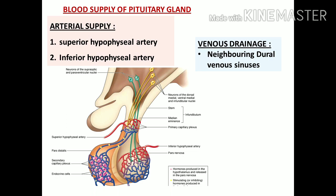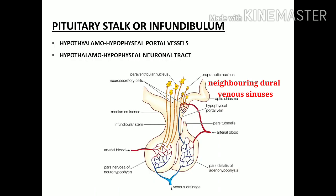Branches from these arteries end in capillary plexuses, and some form portal vessels — the hypothalamo-hypophysial portal vessels. These vessels pass through the pituitary stalk to connect with the hypothalamus, linking the hypothalamus and the anterior pituitary. The venous blood draining from the pituitary gland drains mainly into the cavernous sinus and neighboring dural venous sinuses.